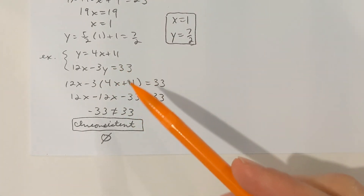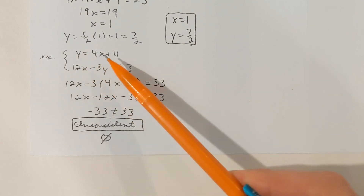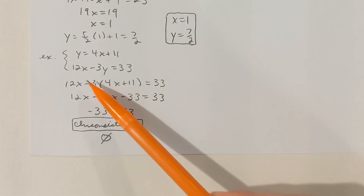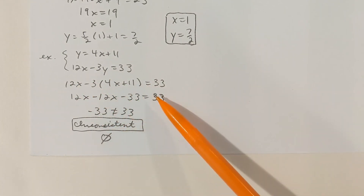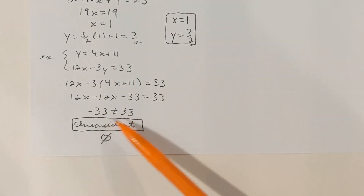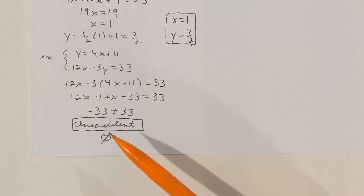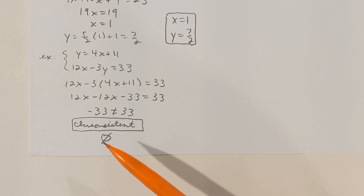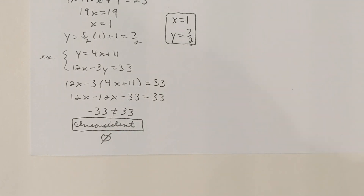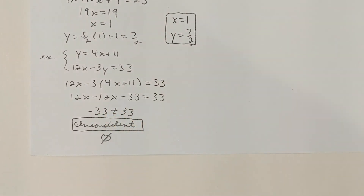Here's another example. In this next one, it makes the most sense to plug the first equation into the second, since the first equation has already been solved for y. When I do that, everything is in terms of x. If I solve for x, x is actually eliminated, and I end up getting negative 33 equals positive 33. That is not true — so this system has no solutions. We call that an inconsistent system. In general, that happens when the variable is eliminated and you have a false statement at the end.